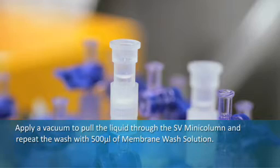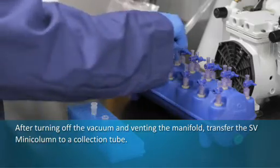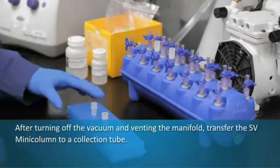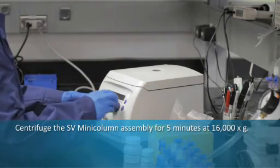After turning off the vacuum and venting the manifold, transfer the SV mini column to a collection tube. Centrifuge the SV mini column assembly for 5 minutes at 16,000 times gravity.